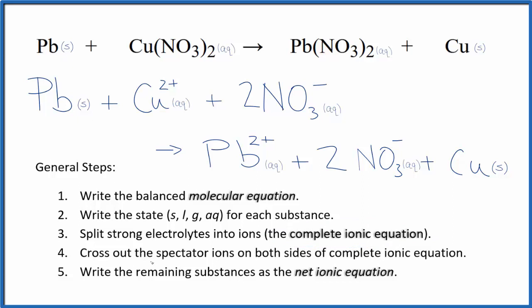Now we can cross out the spectator ions. They're on both sides of the complete ionic equation. So this is our reactants, and then down here we have our products. I can see that in the reactants, I have this two nitrates here, and then they repeat in the products. So the only thing that's the same on both sides, these two nitrates. Everything else is different. So this is our net ionic equation for Pb plus Cu(NO3)2.